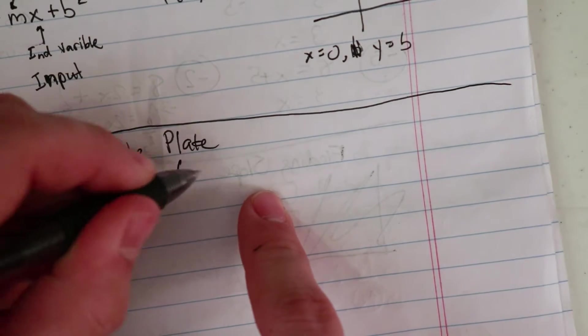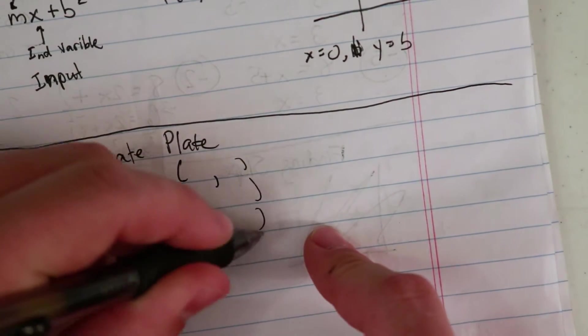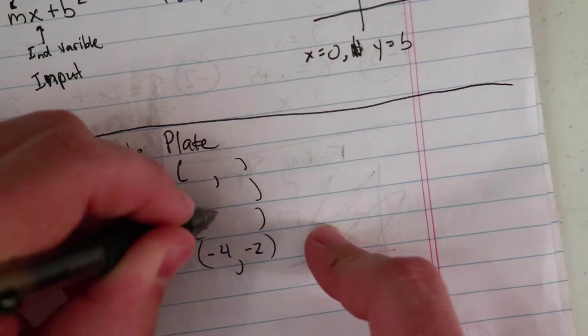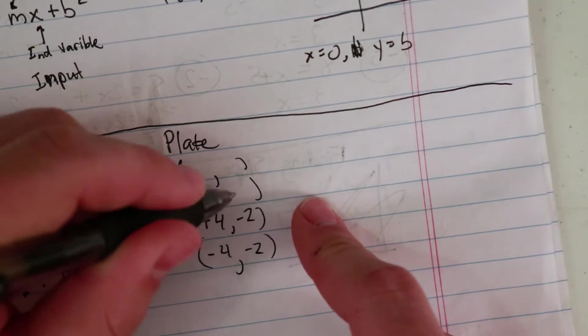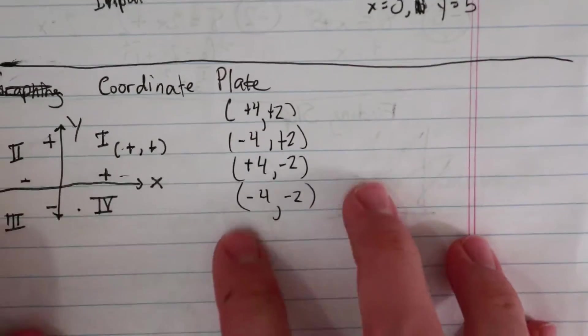So I'm going to come up with four points here: negative four, negative two; positive four, negative two; negative four, positive two; positive four, positive two. Okay, so I have all these points.